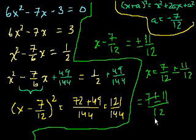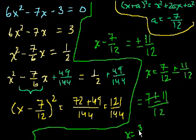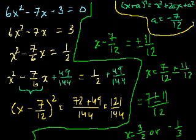So what are the two options? 7 plus 11 is 18 over 12, so x could equal 18/12, which is 3/2. Or what's 7 minus 11? That's minus 4 over 12, so it's minus 1/3. There you have it — that is completing the square.